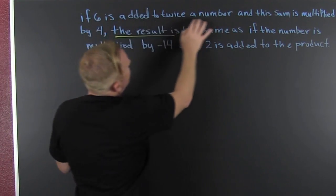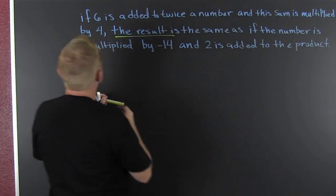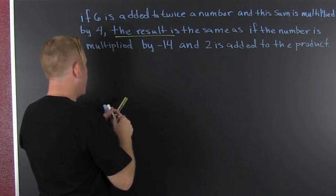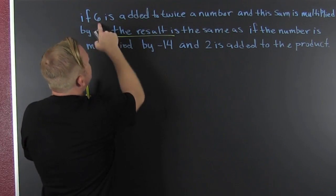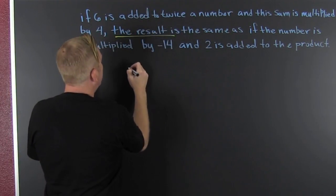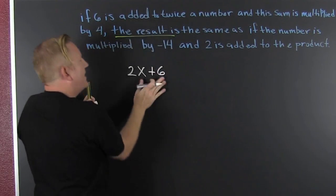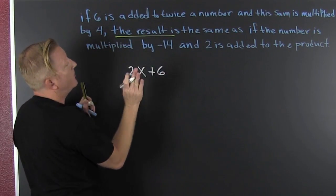The first part: if six is added to twice a number and the sum is multiplied by four. What? Let's go and let's translate that. Six is added to twice a number, so 2x plus 6. All right, that looks like six is added to twice a number. Then what?